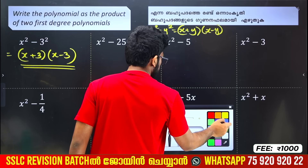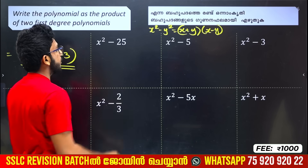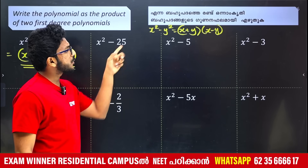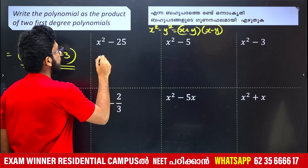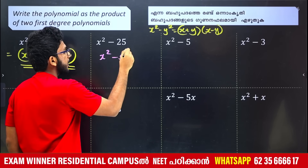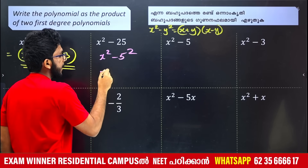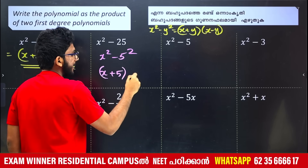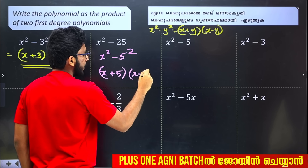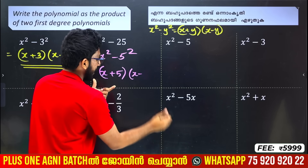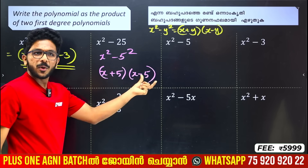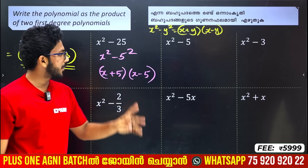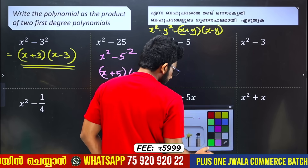Next question: x² minus 25. This is x² minus 5². Using x² minus y² equals x plus y into x minus y, we get x plus 5 into x minus 5. That is the answer.